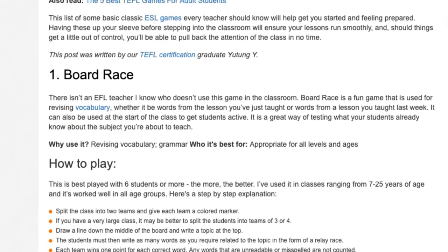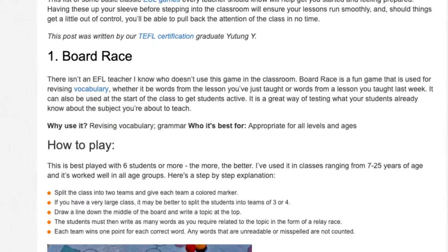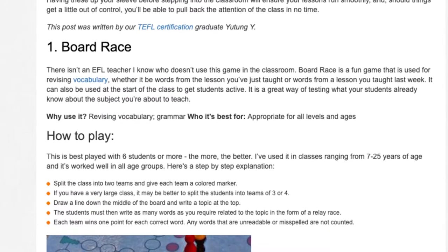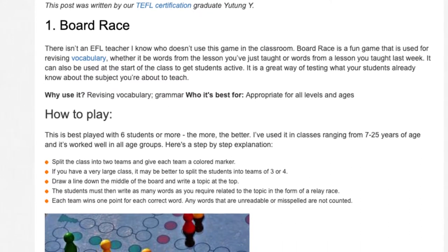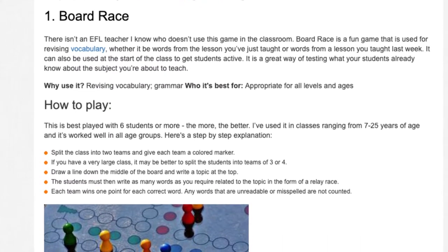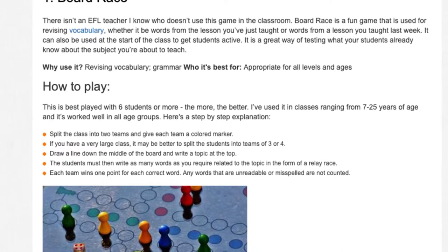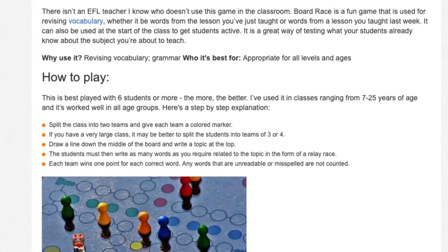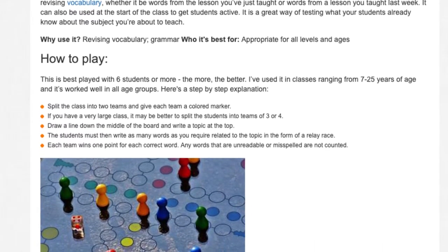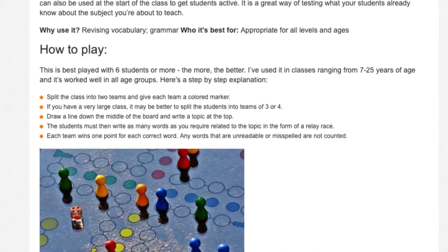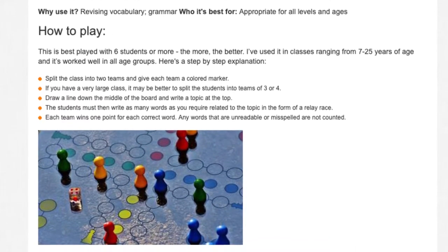Who it's best for: appropriate for all levels and ages. How to play: this is best played with six students or more — the more, the better. I've used it in classes ranging from 7 to 25 years of age and it's worked well in all age groups. Split the class into two teams and give each team a colored marker. If you have a very large class, it may be better to split the students into teams of three or four. Draw a line down the middle of the board and write a topic at the top. The students must then write as many words as required related to the topic in the form of a relay race. Each team wins one point for each correct word. Any words that are unreadable or misspelled are not counted.